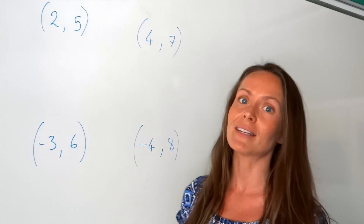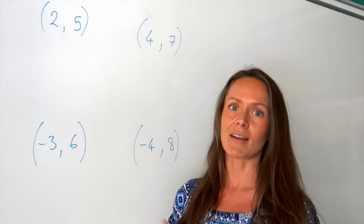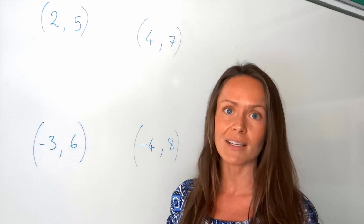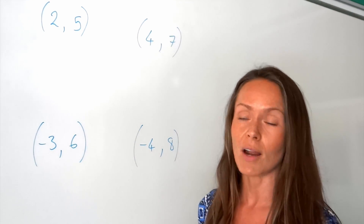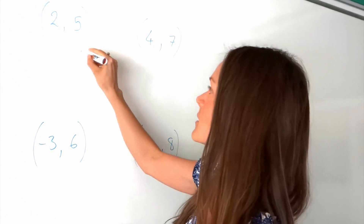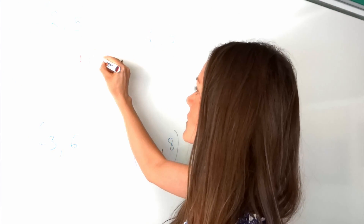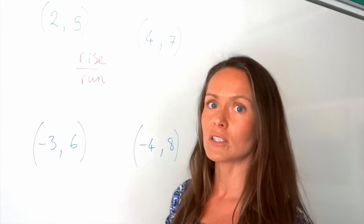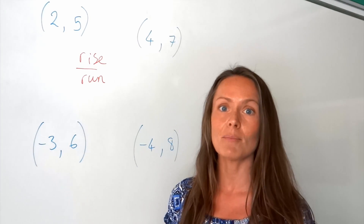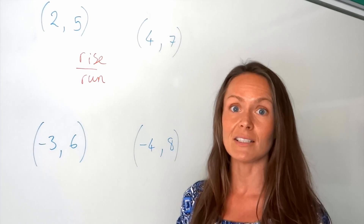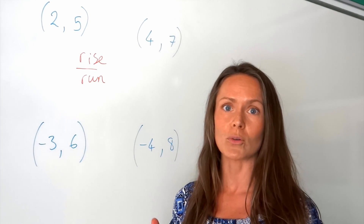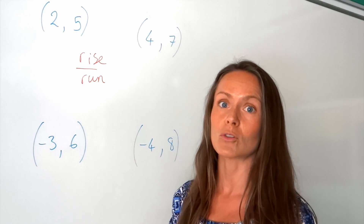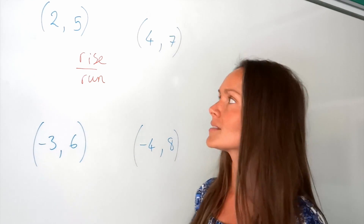To work out the gradient of a straight line in these examples, I'm going to use a method called rise over run. In order to calculate the gradient of a straight line, I must have at least two coordinates on that straight line. So I need to know the coordinates of two points.